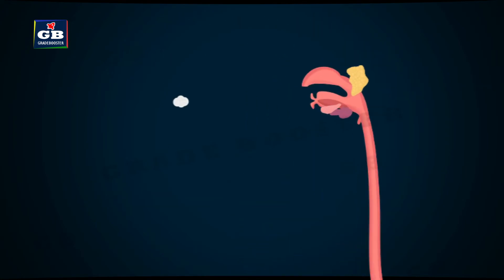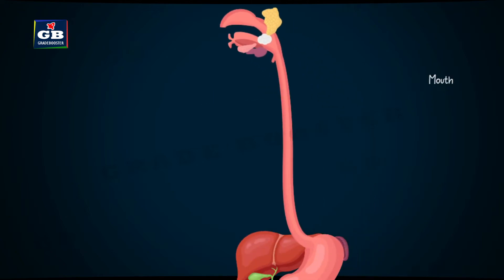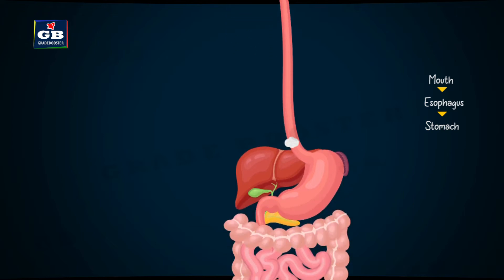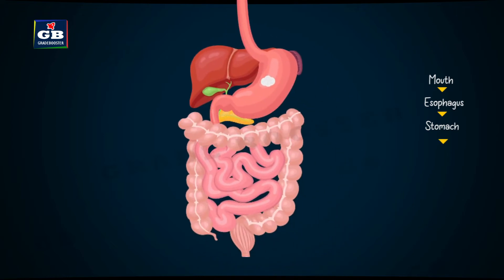The food enters the digestive system through the mouth and then it passes down into the stomach through the esophagus. From the stomach,